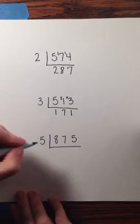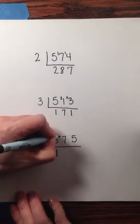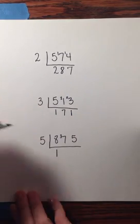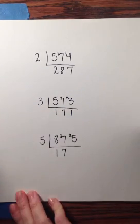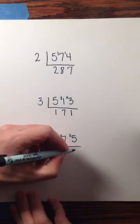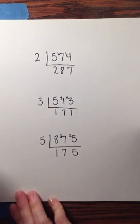And then our final problem. 5 into 8 goes once with 3 left over. 5 into 37 fits 7 times with 2 left over. And 5 into 25 fits 5 times.